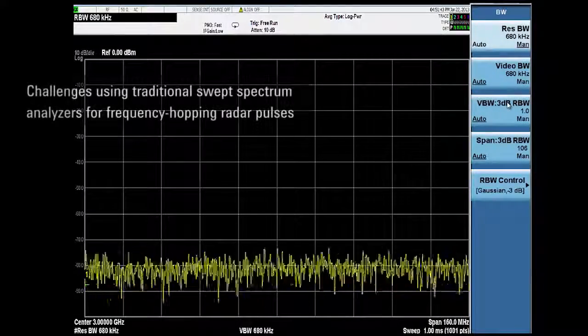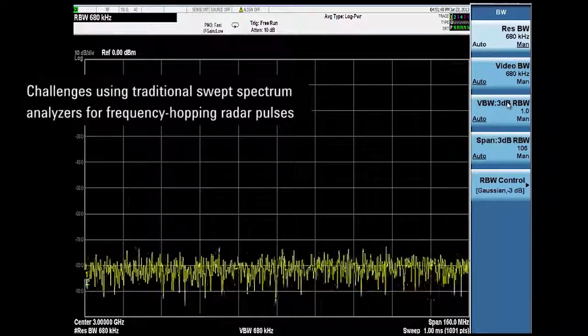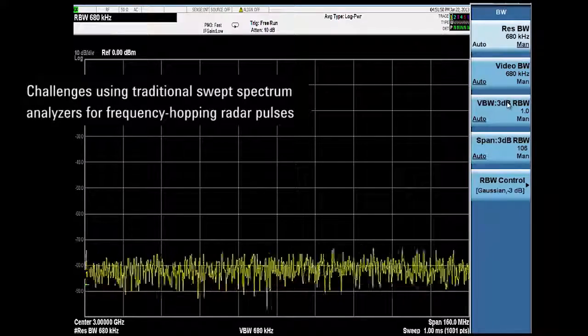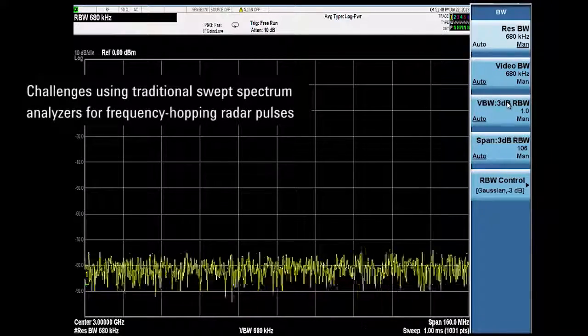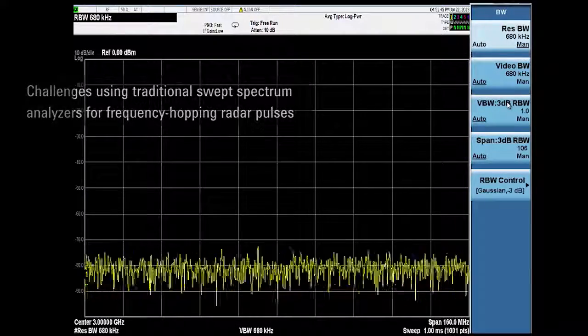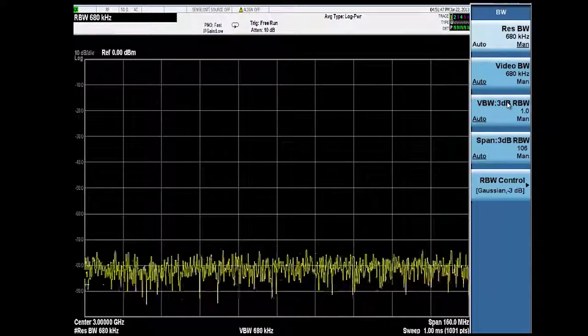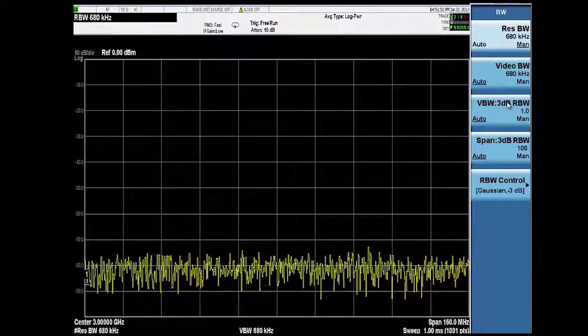Traditional swept spectrum analyzers only display signal power when the sweeping local oscillator is in band. If we wish to analyze a signal like frequency hopping radar pulses, we have to take many sweeps hoping the analyzer local oscillator is tuned to the radar frequency during pulse-on time. If the analyzer LO is tuned slightly out of band, the signal power will be reported inaccurately or missed altogether.